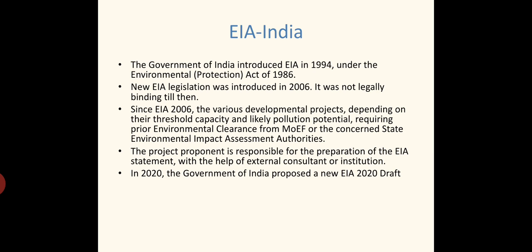Coming to EIA in India: the Government of India introduced EIA in 1994 under the Environmental Protection Act 1986. The Act was drafted in 1986 but implementation came in later stages, with EIA included in 1994. New EIA legislation was introduced in 2006. It was not legally binding until then — from 1994, projects had to get clearance from the Ministry, but it became legally binding only with the EIA legislation in 2006.